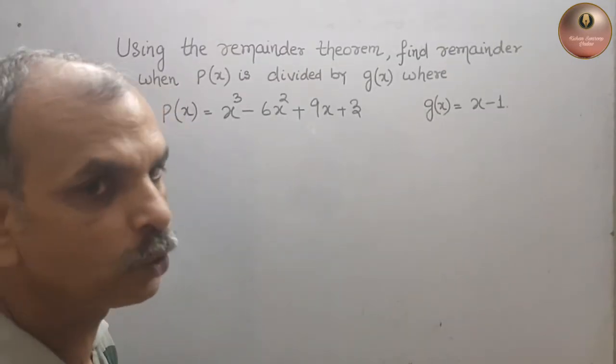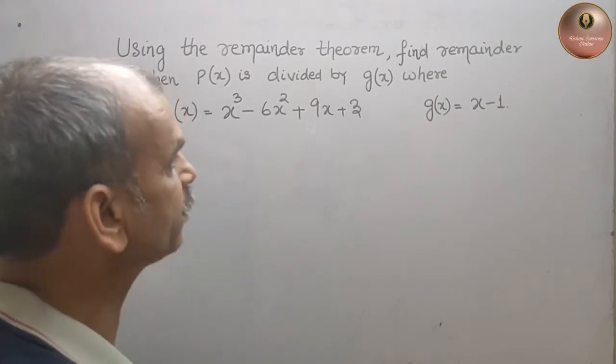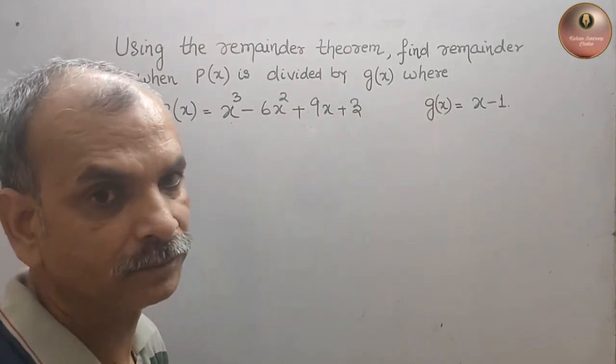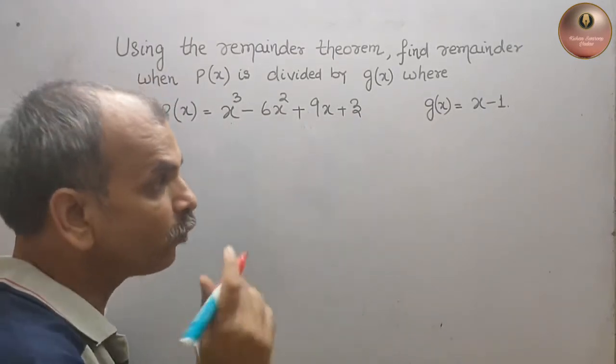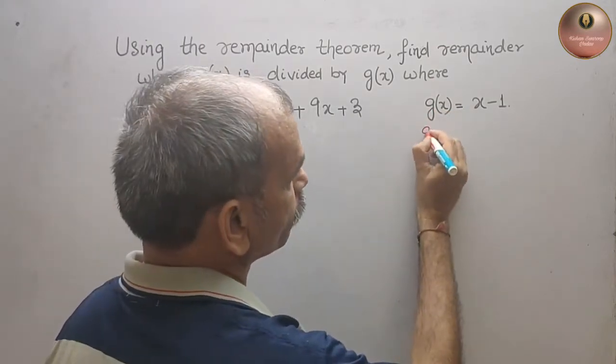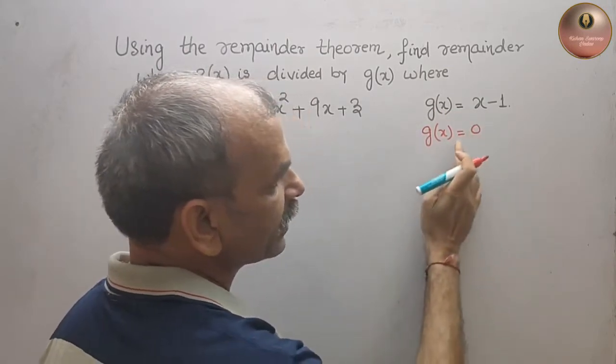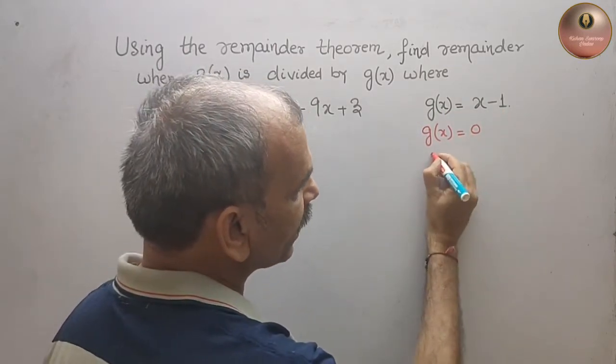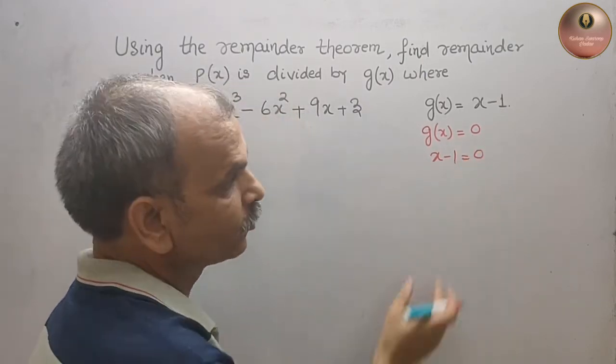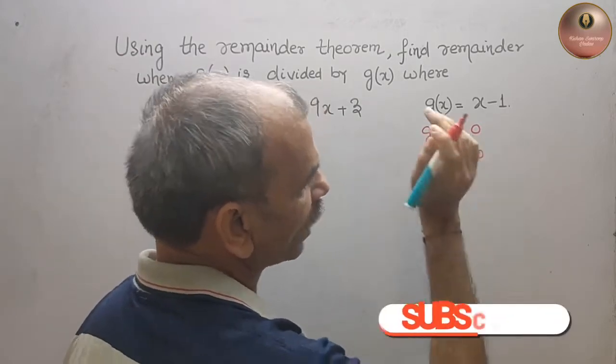So first what we have to do? We have to find out the value of x so that if you substitute here you will get your remainder. So for that what we will do? We will make g(x) equal to 0. g(x) that is equal to 0. That means that x - 1 is also equal to 0. So now you will get the value of x. x is equal to 1.